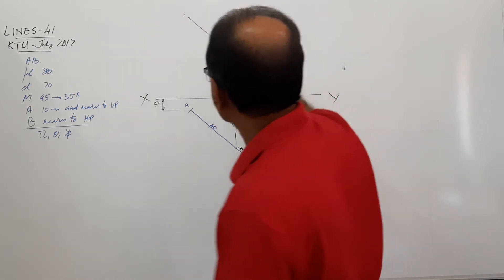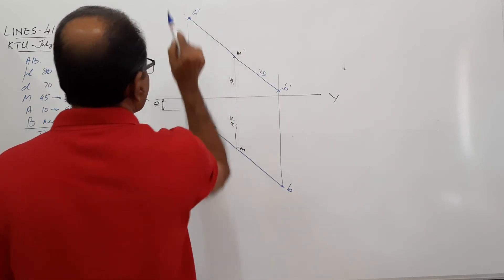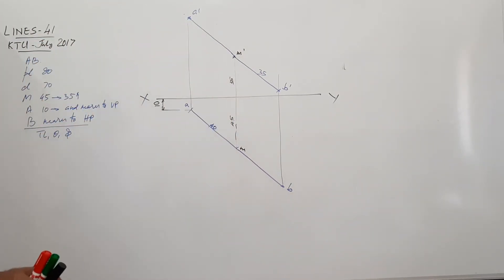What do you get? A dash. It will fall on this vertical projector itself.